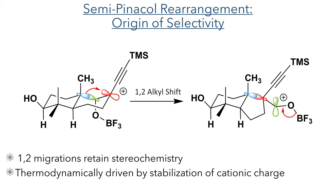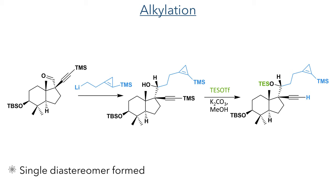With the alkyne now installed, the authors could functionalize the molecule with the other precursor necessary for the Pauson-Khand reaction. For this they used a cyclopropene moiety, which would accelerate the reaction due to its inherent strain. Addition of an alkyl organolithium compound to the aldehyde generated the desired product as a single isomer, which was then protected using a TES group.